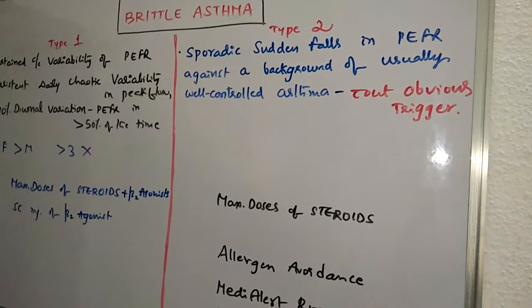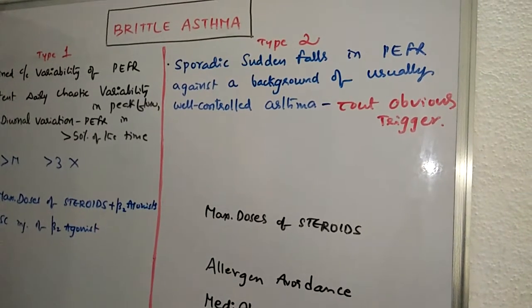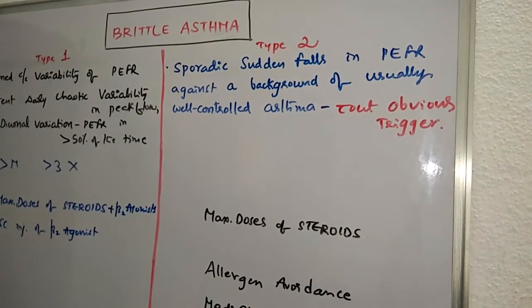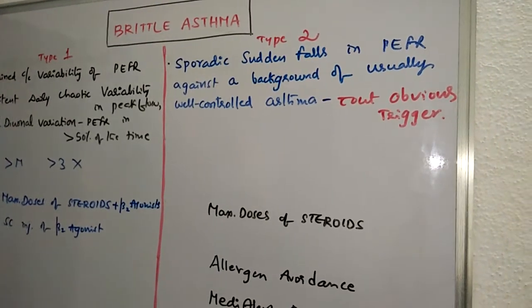Let us learn about brittle asthma today. Brittle asthma is a type of asthma distinguishable from other forms of asthma by recurrent severe attacks. There are two subtypes, type 1 and type 2.